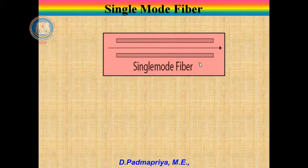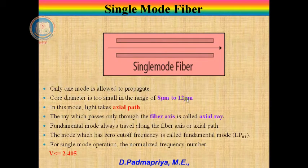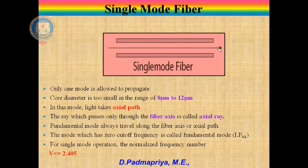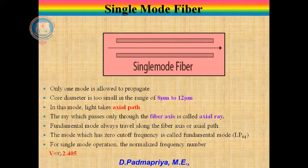Single mode fiber. In single mode fibers, the light rays take a single path through the fiber core. Only one mode is allowed to propagate through the fiber. The core diameter is very small, ranging from 8 to 12 micrometers. Since the core diameter is very small, the light ray takes the axial path through the fiber axis. Only the fundamental mode LP01, which has zero cutoff frequency, can travel along the fiber axis. For single mode operation, the normalized frequency number V should be less than or equal to 2.405.